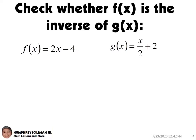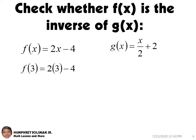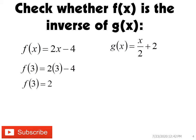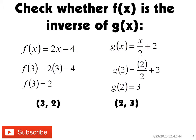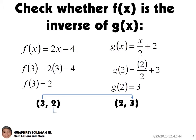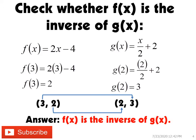We can try substituting a number for x in f(x) — it would be better if it's a whole number. We can use 3 to evaluate f(x); we will get f(3) equals 2, and the ordered pair is (3, 2). If we use 2 to evaluate g(x), the result will be 3, so the ordered pair is (2, 3). You can see that the input and output for the two functions were switched, so f(x) is the inverse of g(x).